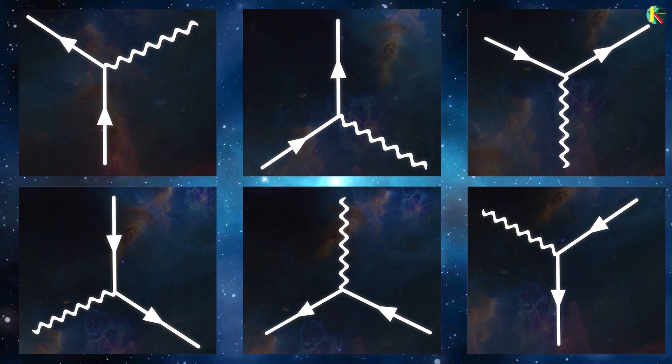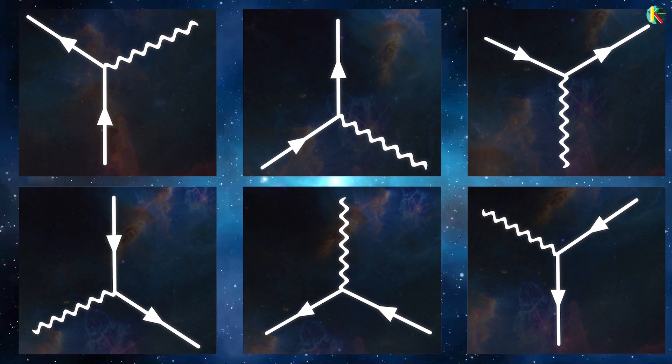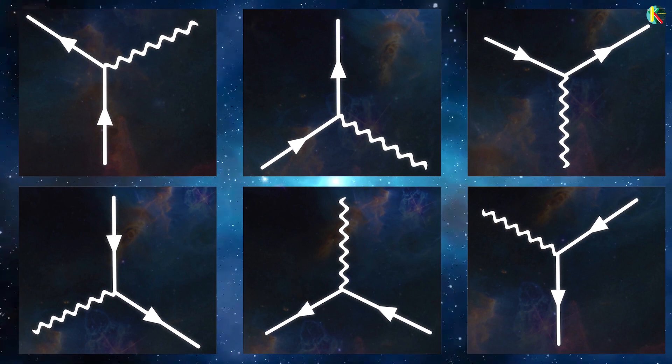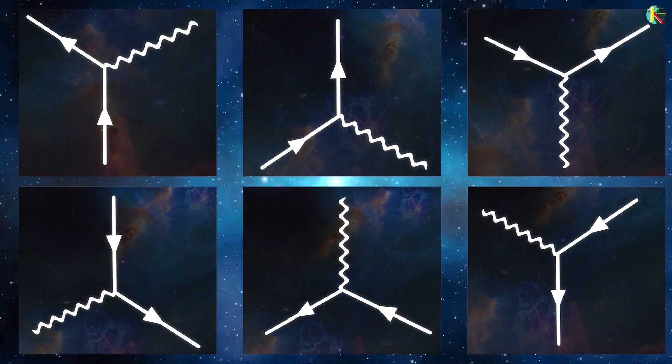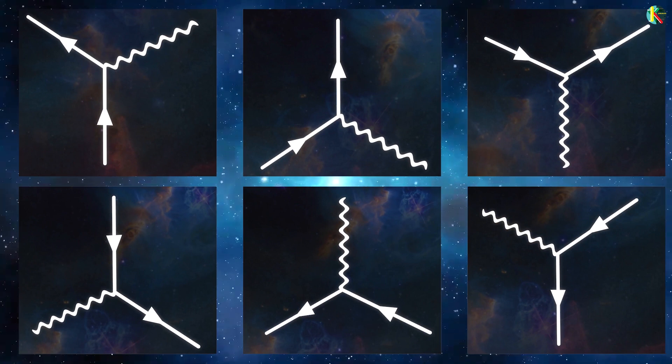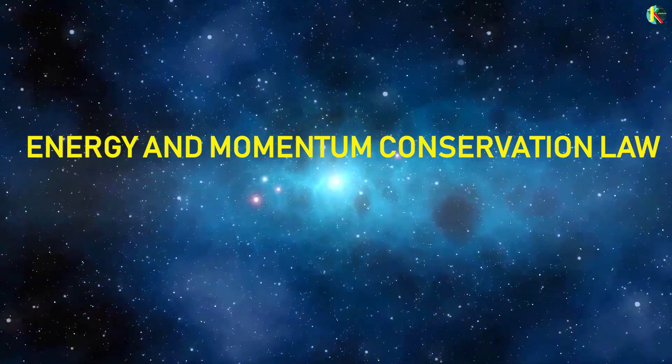That's all the ways in which the electromagnetic and electron fields can interact. Every single QED interaction is built from these. But why only these interactions? The reason is conservation law.